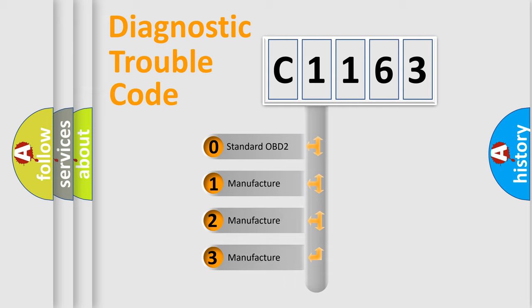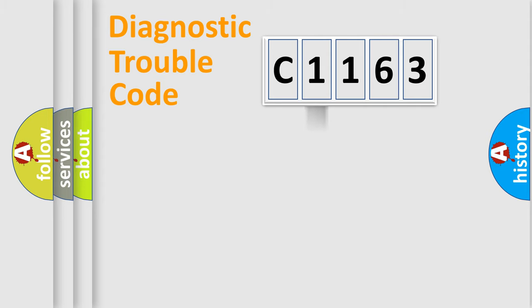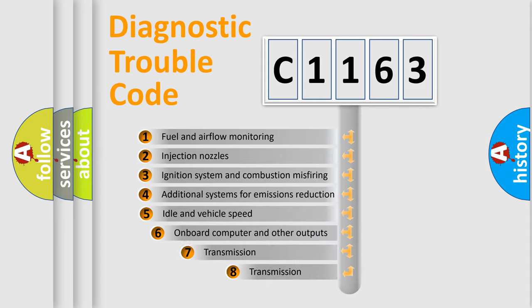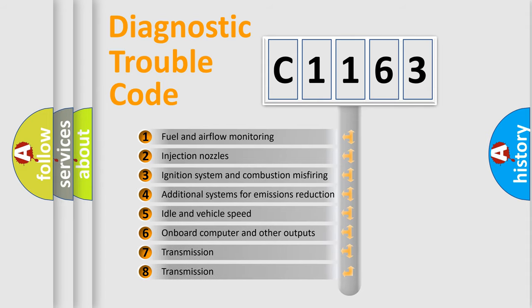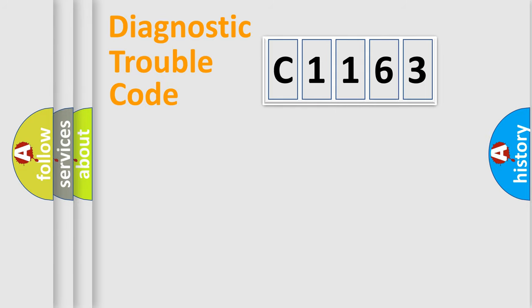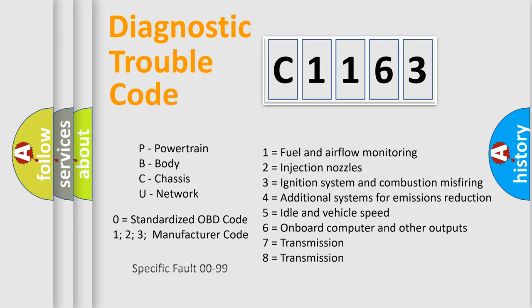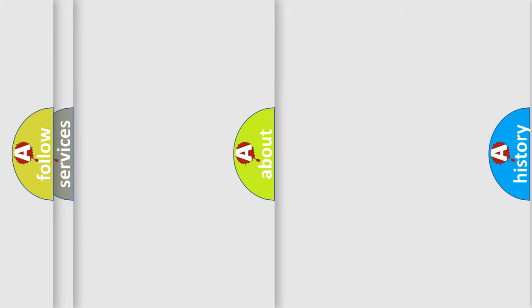If the second character is expressed as zero, it is a standardized error. In the case of numbers 1, 2, or 3, it is a car-specific error. The third character specifies a subset of errors. The distribution shown is valid only for the standardized DTC code. Only the last two characters define the specific fault of the group. Let's not forget that such a division is valid only if the other character code is expressed by the number zero.